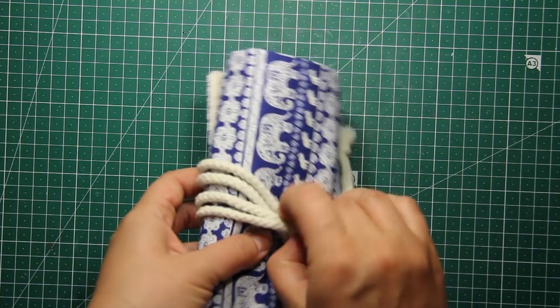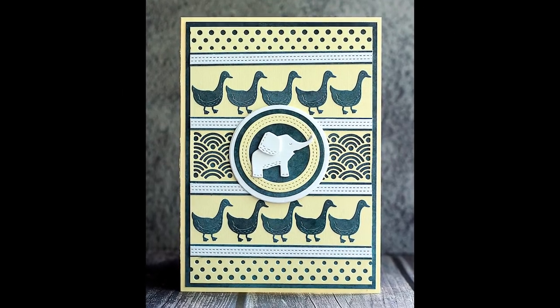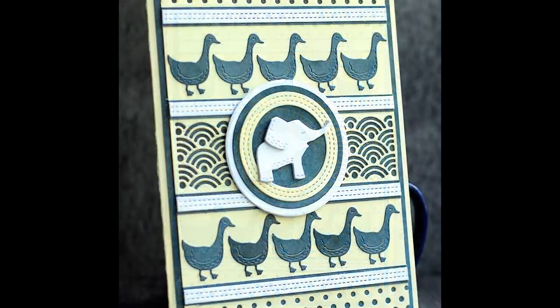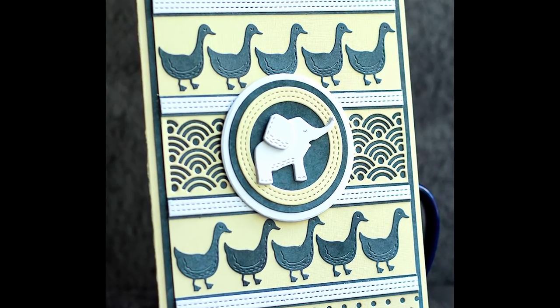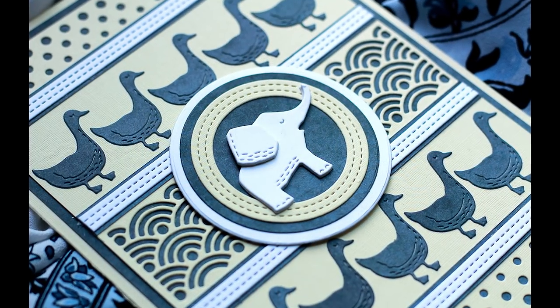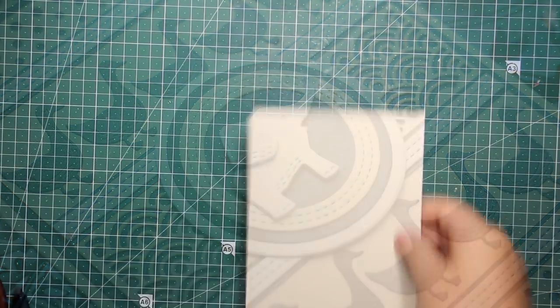Since I don't have any die stamp or embossing folder that would have that ethnic background, I decided to create one myself using some supplies that I already have. So I'm going to share with you how I created that textured background with poppy stamps dies.